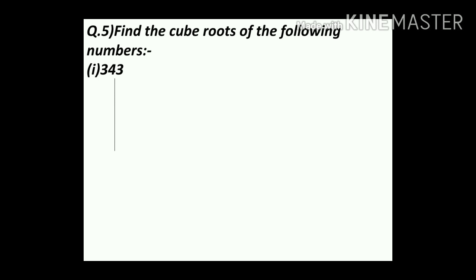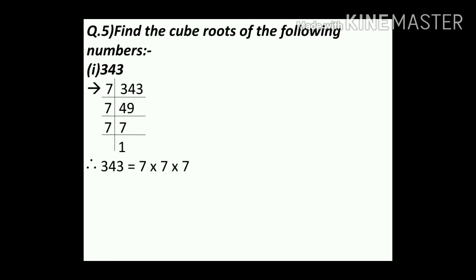Dividing 343 by 7 gives 49. Dividing 49 by 7 gives 7. Dividing 7 by 7 gives 1. Therefore 343 equals 7 into 7 into 7. Since we are finding the cube root, we make a group of 3 numbers and take one number out. Therefore cube root of 343 equals 7.